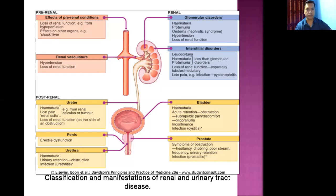Let's start with the classification and manifestation of renal and urinary tract disorders. If a problem occurs in the urinary tract, we can broadly divide those disorders into three headings: pre-renal disorders, renal disorders, and post-renal disorders. In pre-renal conditions, there is decreased blood flow to the kidney or some problem in the renal vasculature.